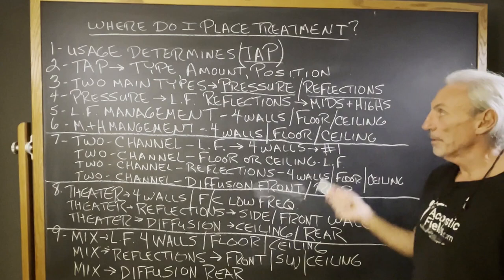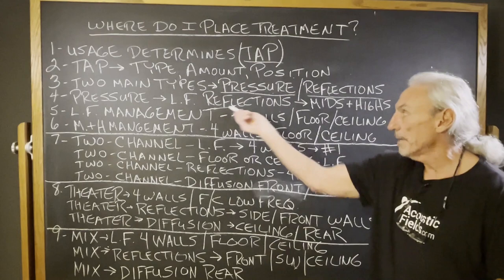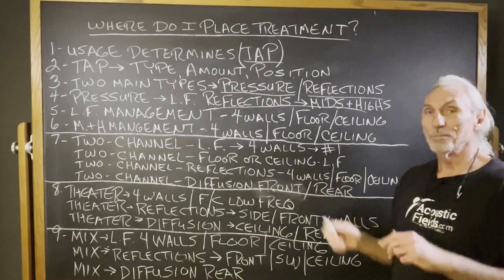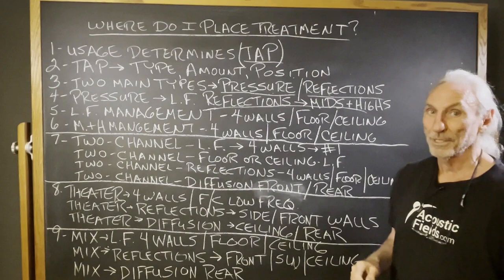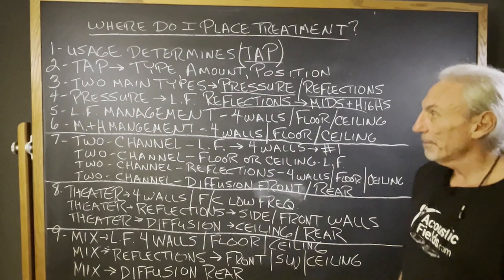We have two types of treatment: pressure and reflections. We have two types of problems that need certain treatments. Pressure treatment is different than reflections. Pressure is low frequency; reflections are middle and high frequencies. We have to keep that balance in line because there's not one technology that works for both. You can't use low frequency absorbers to absorb high frequencies, and you can't use high frequency absorbers to absorb low frequencies. Certain technologies work for certain frequencies and you have to be cognizant of that.